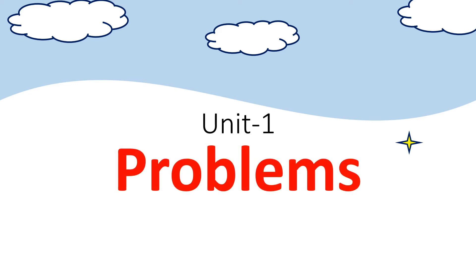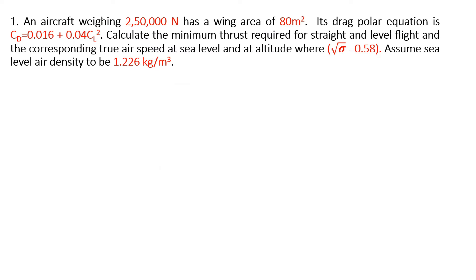Hi everyone, today in this video we are going to solve one problem. An aircraft weighing 250,000 Newton has a wing area of 80 meter square. Its drag polar equation is CD equals 0.016 plus 0.04 CL square. Calculate the minimum thrust required for straight and level flight and corresponding true airspeed at sea level and at altitude where square root of Sigma equals 0.58. Assume sea level air density to be 1.226 kg per meter cube.